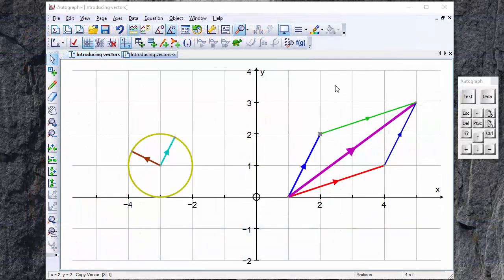In this video we're going to have a look at how Autograph can be used to introduce vectors: the vector sum, the vector difference, the parallelogram law, and the unit circle.